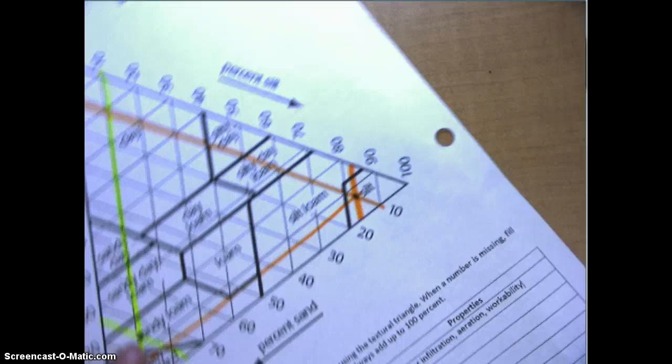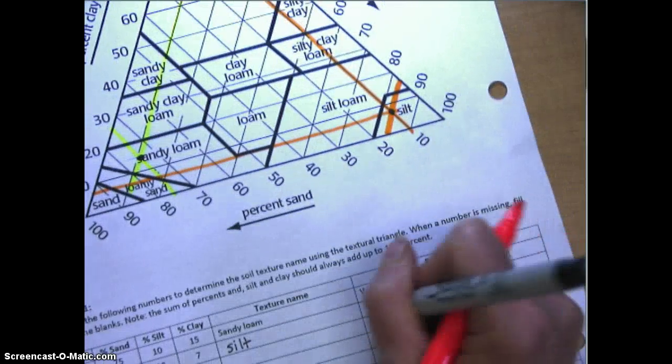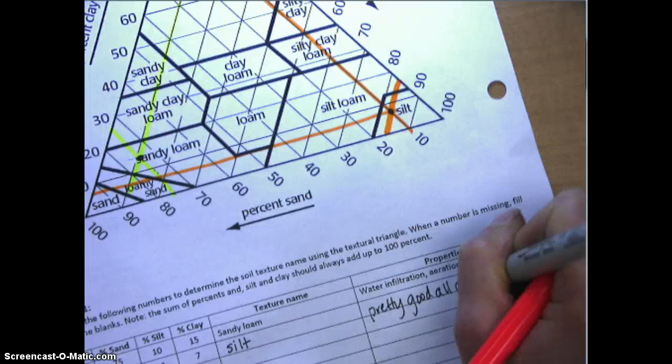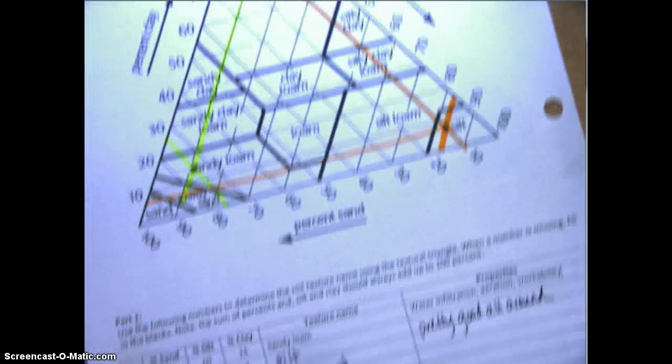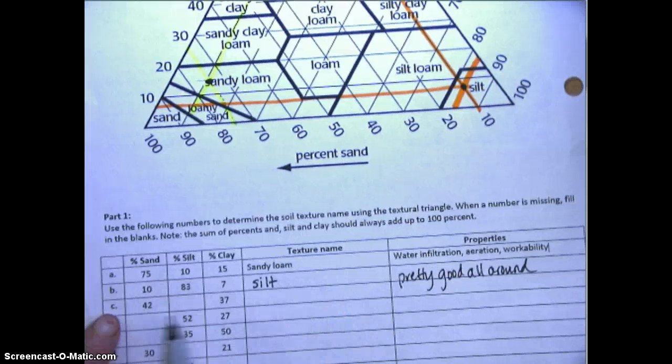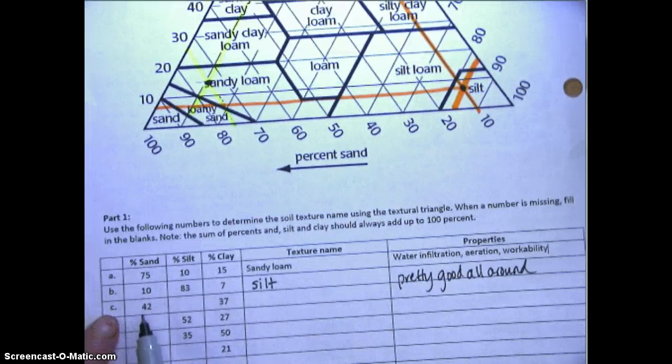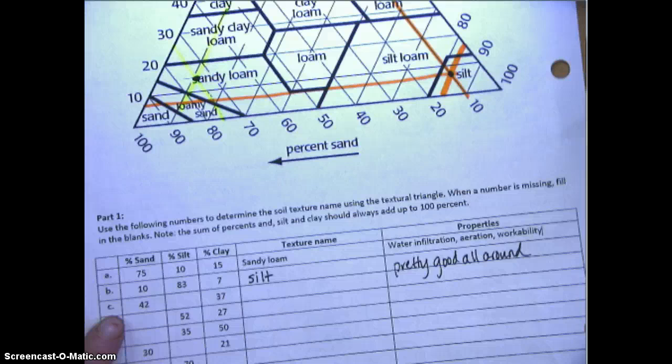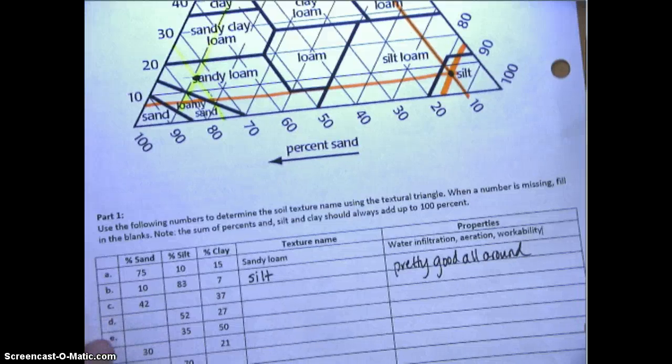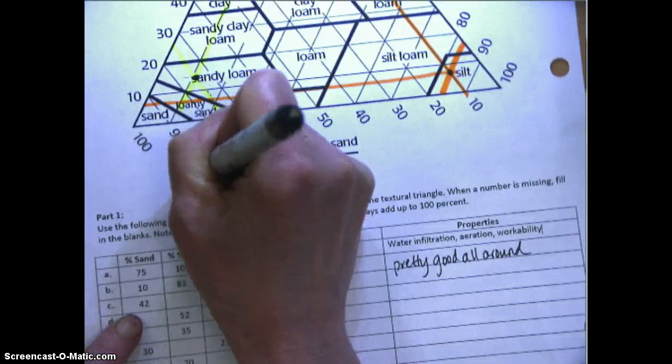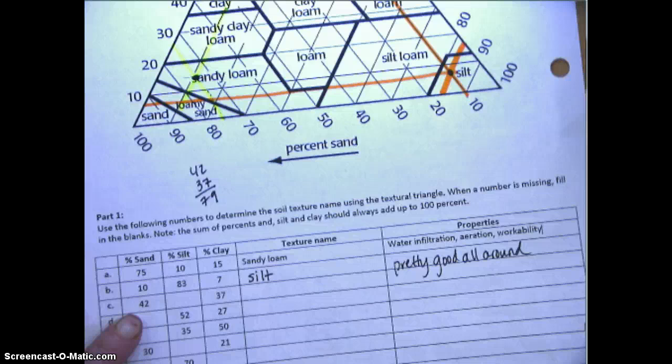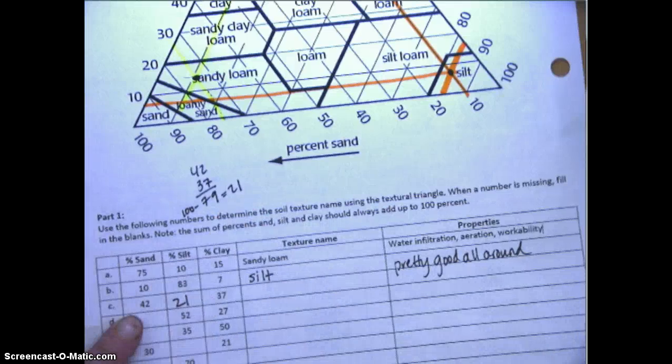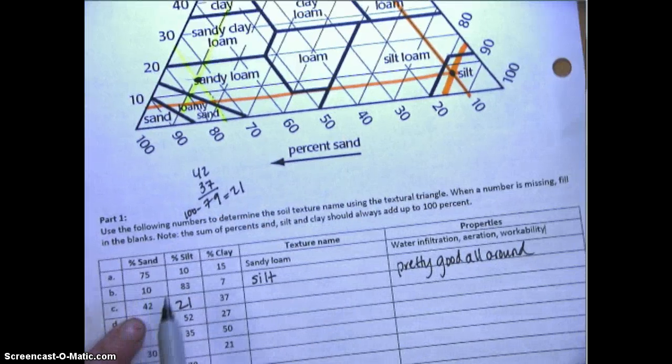If you look at this table, silt has medium nutrient holding capacity, it filters water pretty good, it can hold water pretty well, aeration is the amount of pore space so it has pretty decent pore space, and it's moderately easy to work with. So I would put under properties pretty good all around. Now let's look at this third example - 42% sand, we're not sure how much silt, 37% clay. To figure out the amount of silt, the whole thing has to add up to 100.